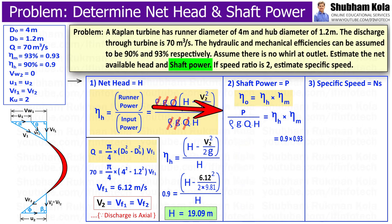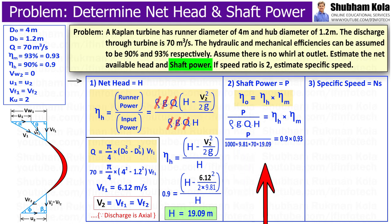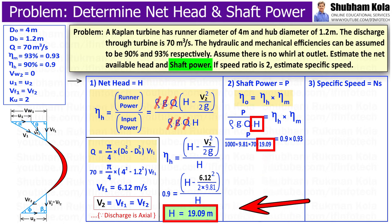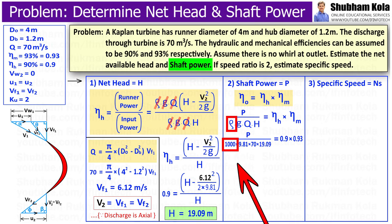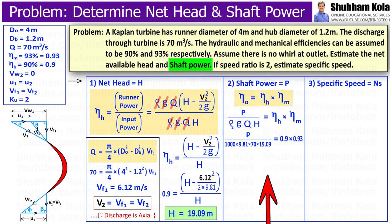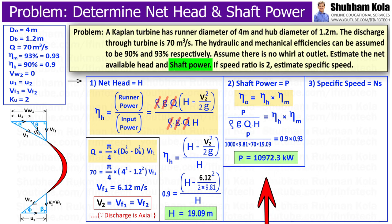Input power is ρgQH, where net head H has already been found, discharge Q is 70, density of water ρ is 1000, and g is 9.81. By calculating this, we get shaft power equal to 100,972.3 kW.